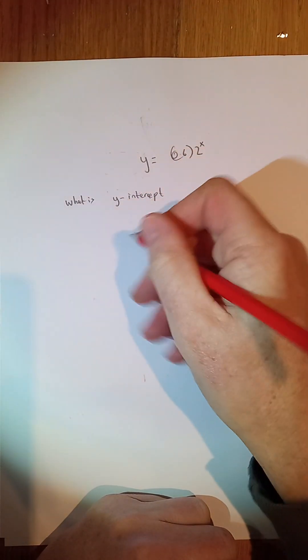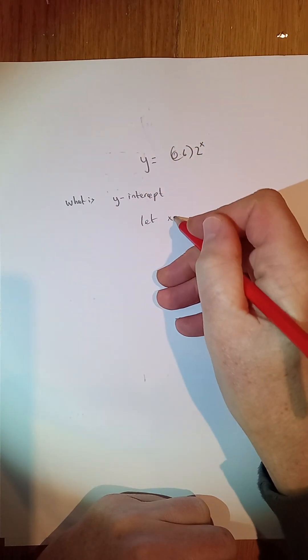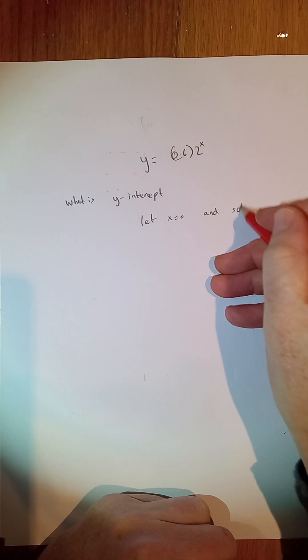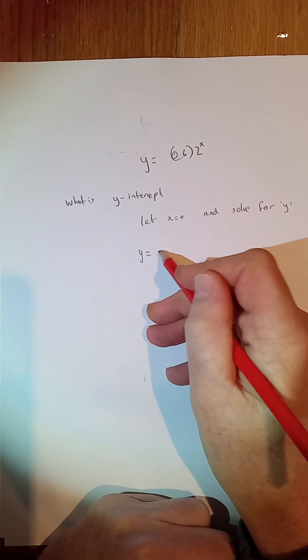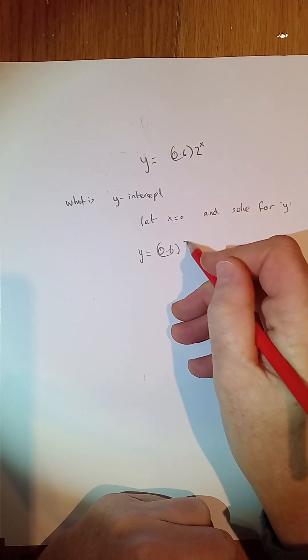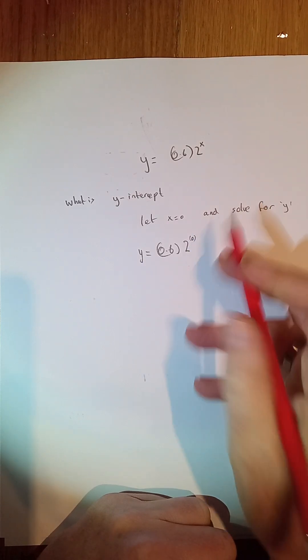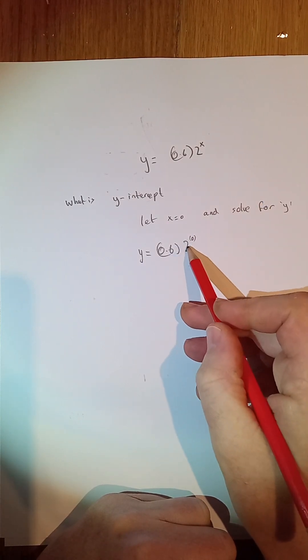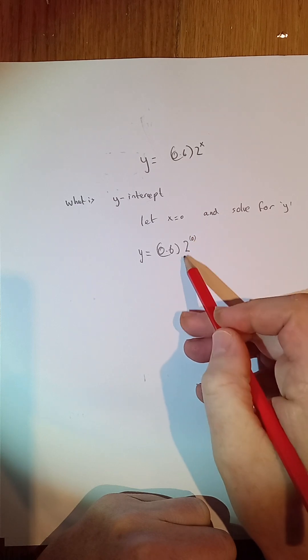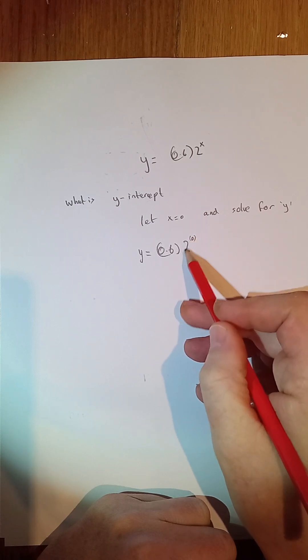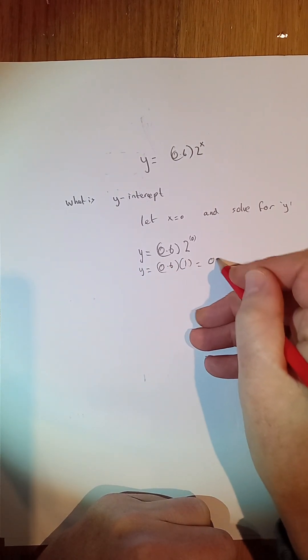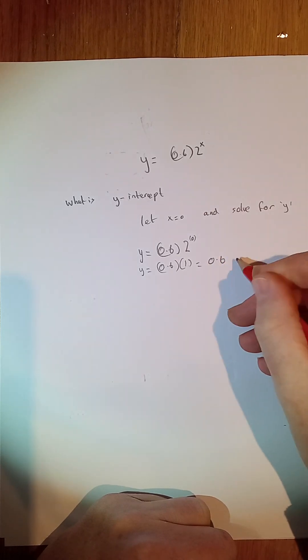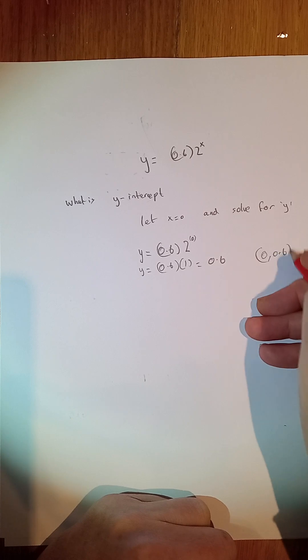So when you're trying to find that initial state, the initial amount, whether it's 0 or just a seed amount in a growth formula, it's usually where it cuts the y-axis. To find the y-intercept, it's very simple. We're going to let x equal 0 and solve for y. In this case, we have y equal to 0.6 times 2 to the power of 0. That's really y equals 0.6 times 1, which is 0.6. So that cuts the y-axis at 0 and 0.6.